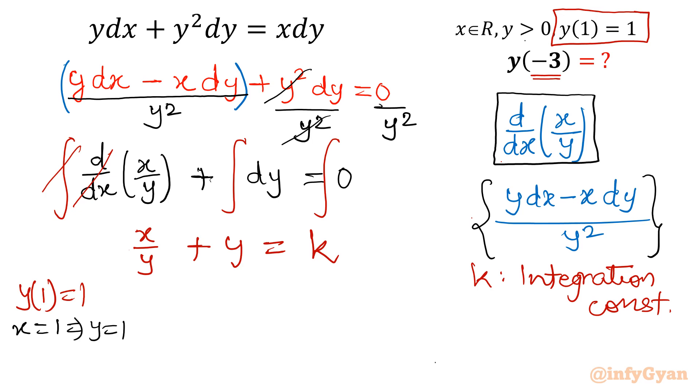Put the value x equals 1, 1 over 1 plus 1 equals k, so 1 plus 1, that means k equals 2. So our differential, this equation converts into x over y plus y equals 2.